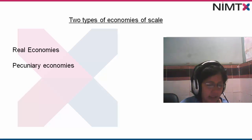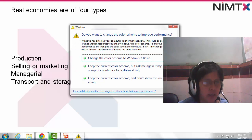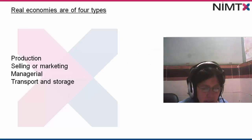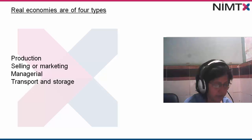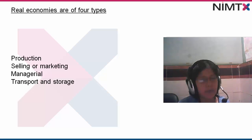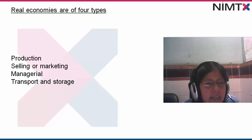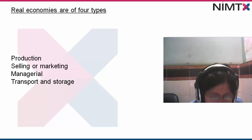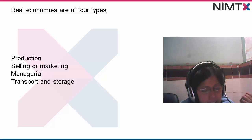First we study real economics, which consists of four areas: production, selling, marketing, management, and transport and storage. In production, we have labor specialization and skills, time saving, automation, cumulative volume economics, technical capital specialization, indivisible setup cost, technical relation between volume and other factors, and inventory economics. Inventory economics is the study of spare parts, raw materials, and ready products in our inventory.